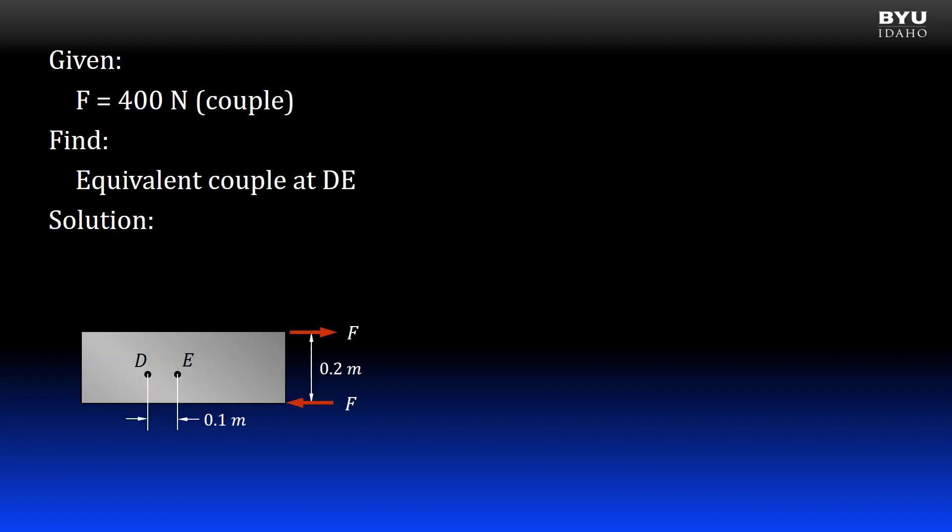First, I will compute the moment due to the 400 newton couple. Here's the equation. F is one of the forces, 400 newtons, and D is the perpendicular separation between the forces, 0.2 meters.